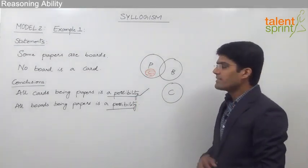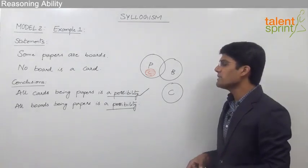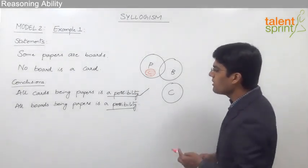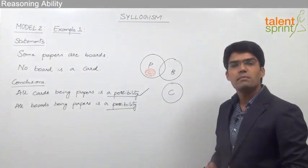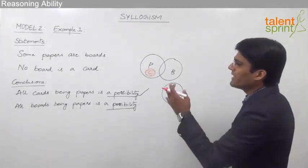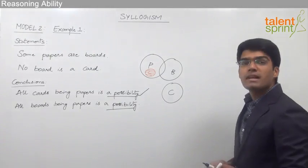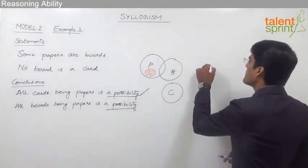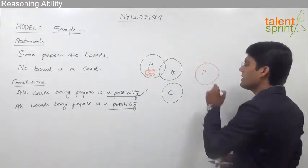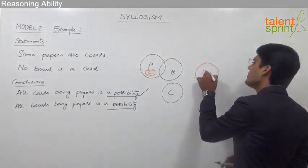Let us now look at the second conclusion: all boards being papers is a possibility. So we need to find out whether all boards can be papers or not. Looking at the given statement, some papers are boards — if we draw papers and boards as shown, these are the papers and the same circle represents the boards.